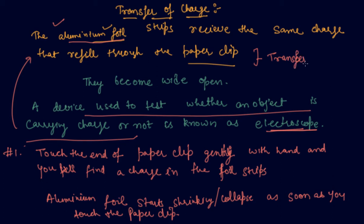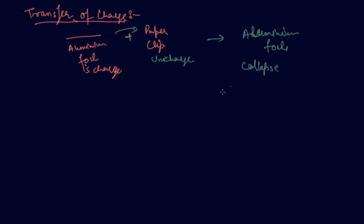Transfer of charge means you are charging aluminum foil again and again by wrapping it with some clip. So now this aluminum foil is charged. When paper clip comes in contact of this aluminum foil, it is uncharged. This charge transfers from aluminum foil to paper clip and the aluminum foil collapses because it gets discharged. This is how charge is transferred.